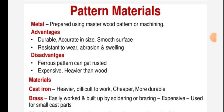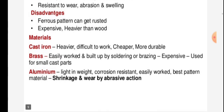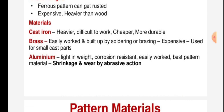Disadvantages of metal patterns: ferrous patterns can get rusted, they are expensive, and heavier than wood. Cast iron is heavier and difficult to work but cheaper and more durable. Brass is easily worked and can be built up by soldering or brazing, but is expensive and used for small cast iron parts.